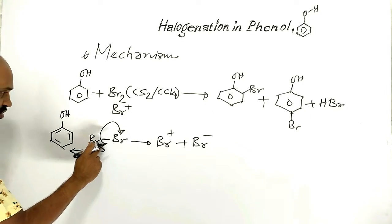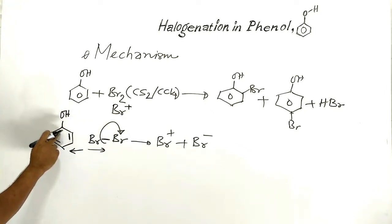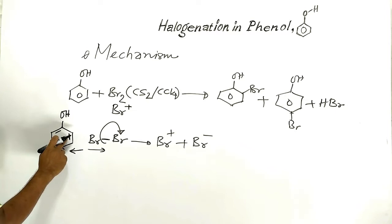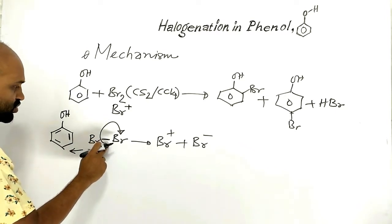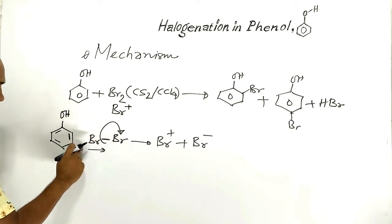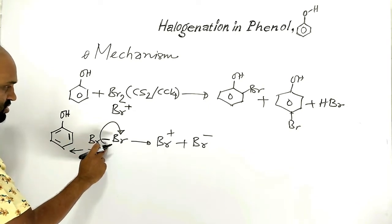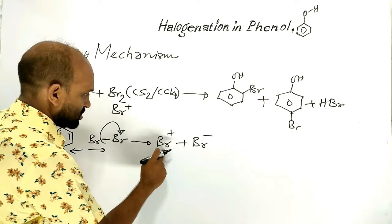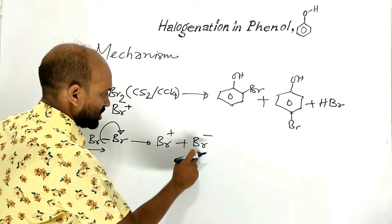When the bromine molecule comes in close contact with phenol, repulsion between the pi-bonded electrons and the covalently bonded electrons of the bromine molecule occurs. Due to this repulsion, the bromine molecule undergoes heterolytic fission, and as a result, a bromine cation and a bromide ion are formed.